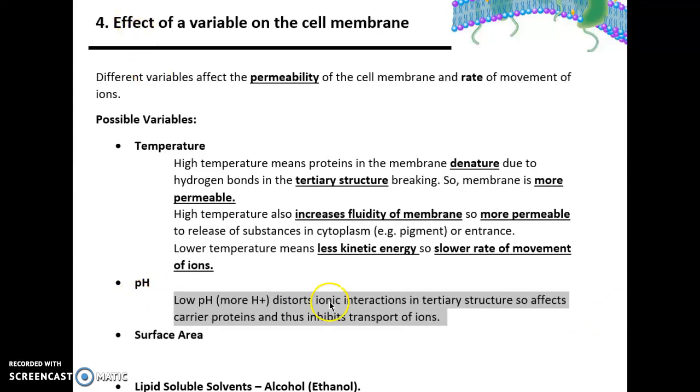Another factor they could ask, speaking of enzymes, is pH. Lower pH means more protons, more H+ ions, and that distorts ionic interactions in the tertiary structure. Therefore that affects carrier proteins and inhibits the transport of ions either in or out of the cytoplasm of the cell.